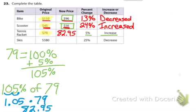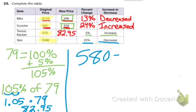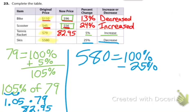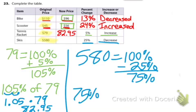Now let's look at the skis. Here's our original price, and we are decreasing by 25%. 580 represents 100%. We are going to decrease that by 25%, so we have 75%. We're looking for 75% of 580.